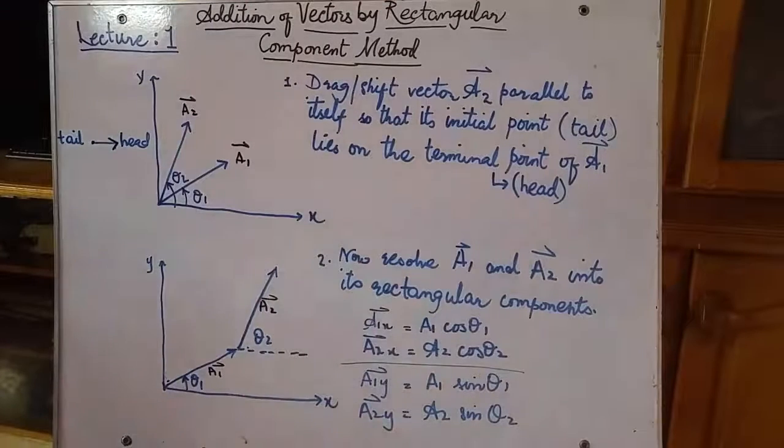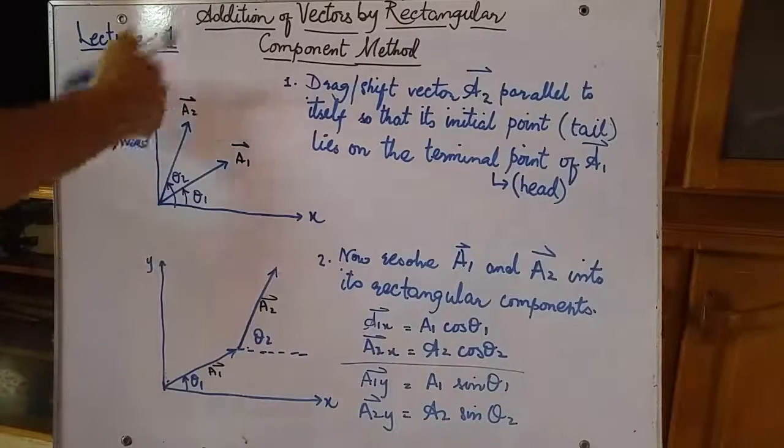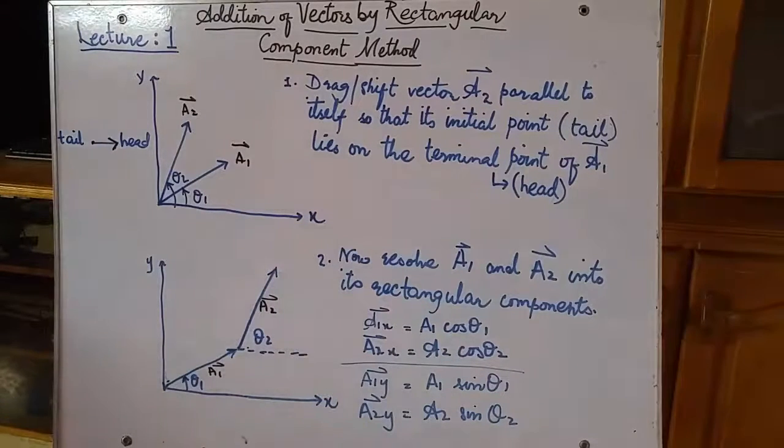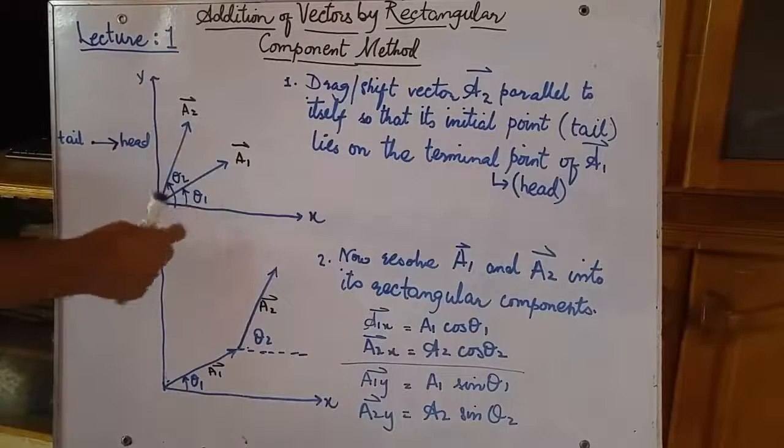Let's start our lecture number one. First of all, we have to understand that we can add two or more than two vectors by two methods. Number one is that you can add two or three vectors by head-to-tail rule, which we are discussing right now. Or you can add two vectors by parallelogram law. I am using the head-to-tail rule method. But before applying head-to-tail rule to add these two vectors, consider these two vectors.